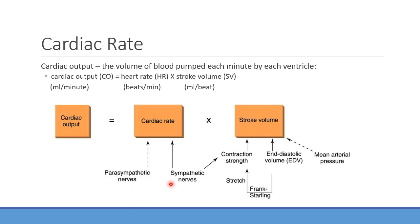Stroke volume is determined by contractility — inotropy — which is the strength of ventricular contraction. Sympathetic nerves play a big role: norepinephrine has a big positive effect on contraction strength. The parasympathetic nerves have a more neutral response because they don't really directly innervate the ventricle, mainly innervating the SA and AV nodes.